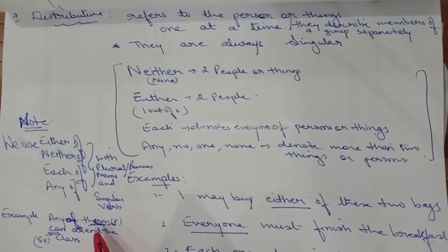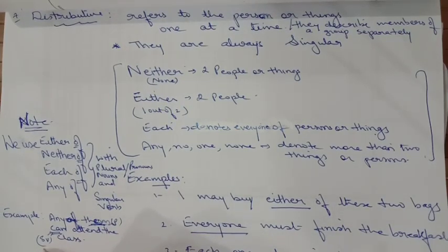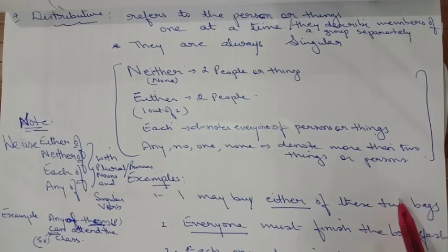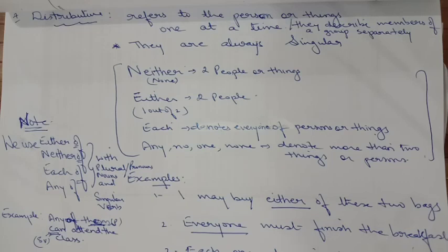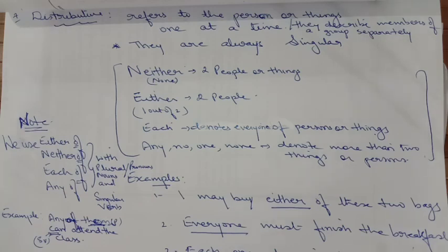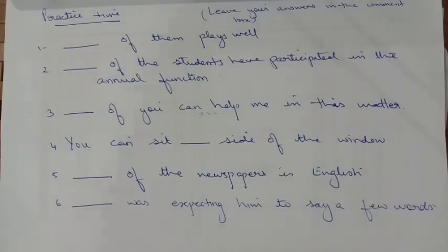Just see the example: 'Any of them can attend the class.' Here 'them' is a plural word and 'can' is the singular verb. 'I may buy either of these two bags' — because two bags are there, you will buy one out of two. 'Everyone must finish the request.' 'Each one of you will be awarded for your hard work.' The distributive pronoun refers to a person or thing one at a time; they describe members of a group separately. Now practise these sentences and leave your answers in the comment box.